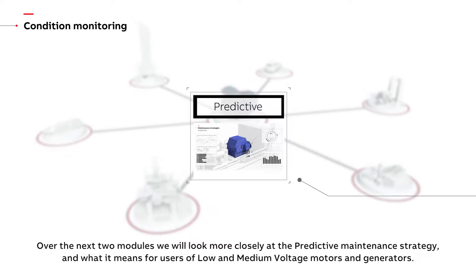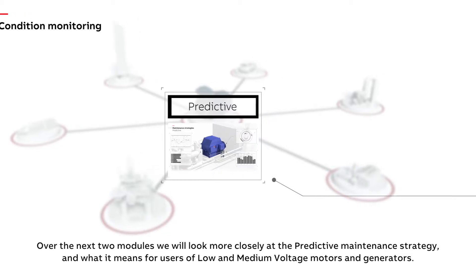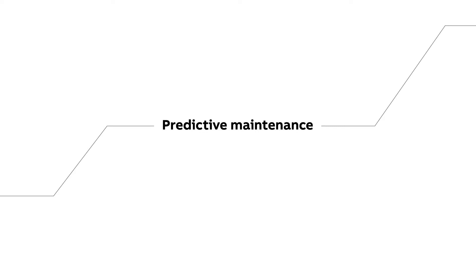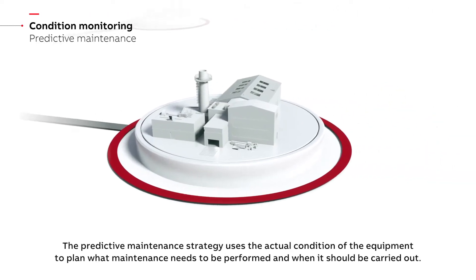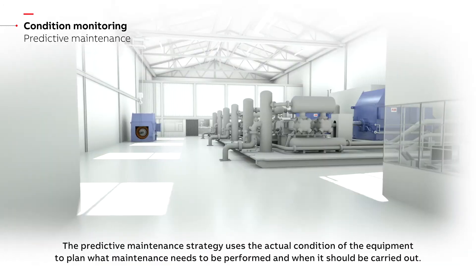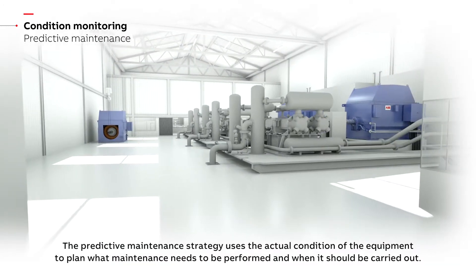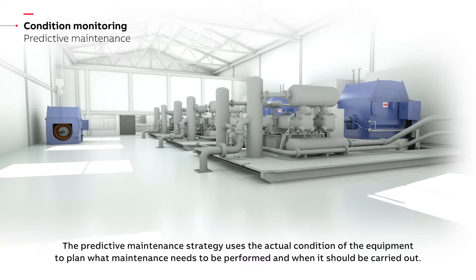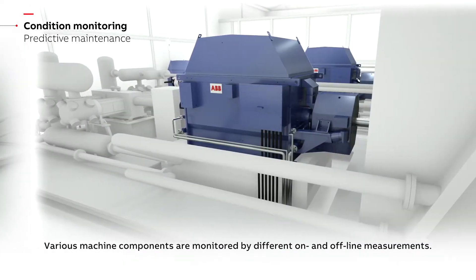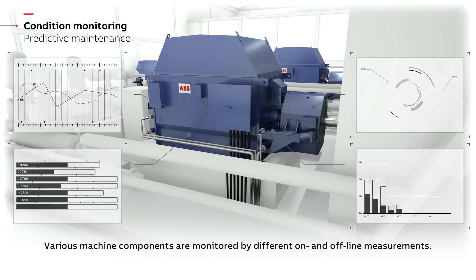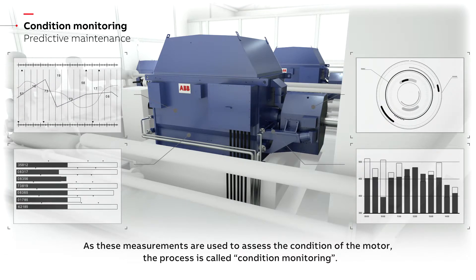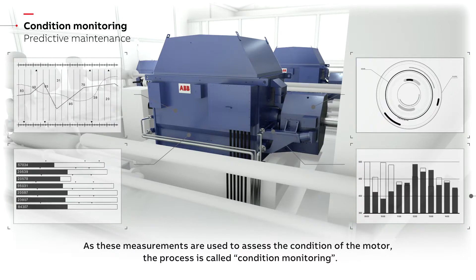The predictive maintenance strategy uses the actual condition of the equipment to plan what maintenance needs to be performed and when it should be carried out. Various machine components are monitored by different on and offline measurements. As these measurements are used to assess the condition of the motor, the process is called condition monitoring.